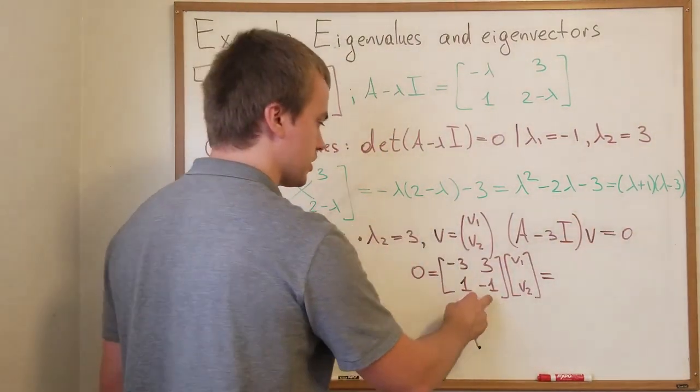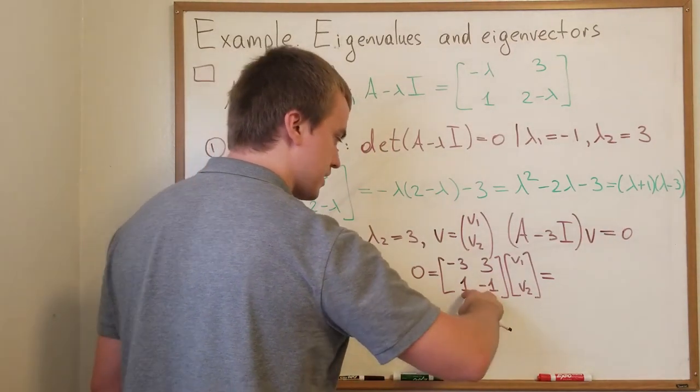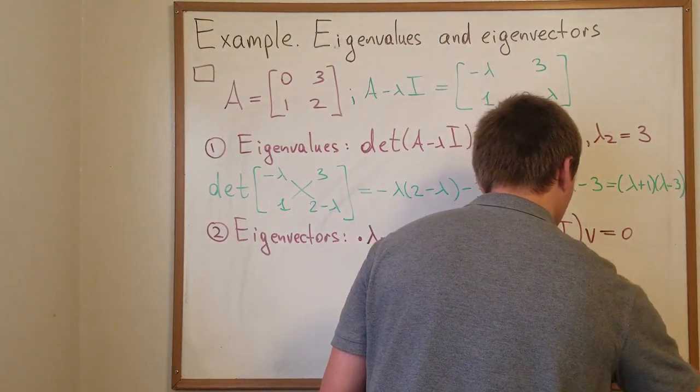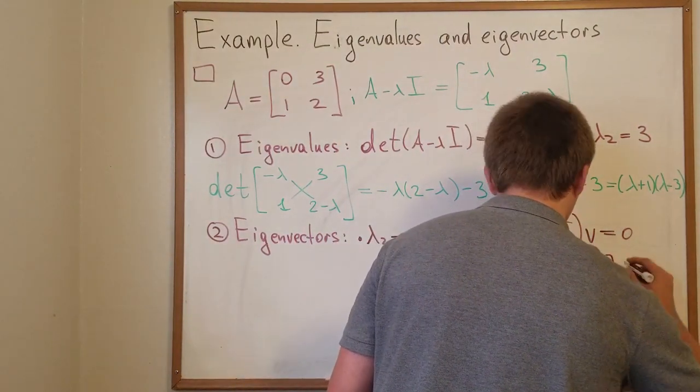Here I can do row reduction. I can multiply my second row by 3 and add to the first one and I'm going to get 0, 0, 1, negative 1, v1, v2.